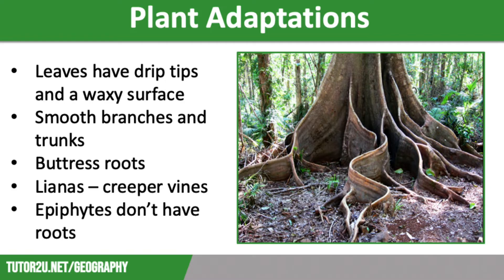Trees also have buttress roots. Many trees grow up to 40 to 50 metres high to reach the sunlight, so they need to be anchored well. Buttress roots have massive ridges above the ground that support the base of the tree and help transport water from the soil. You can see an example of one on the screen.